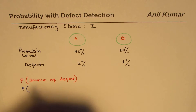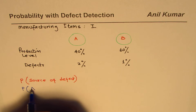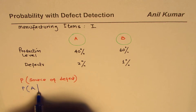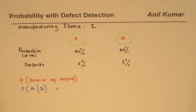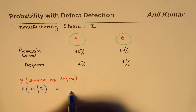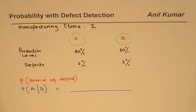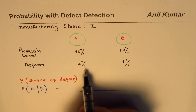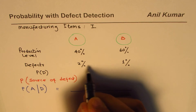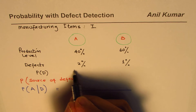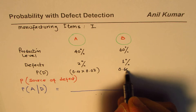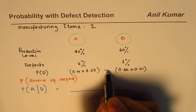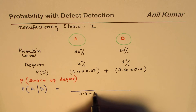We want to find the probability that a defect came from machine A. The defect is D, and we need to find the probability that it came from machine A. We first find the total probability of a defect in the denominator. The probability of defect is the combination from both machines: 0.4 times 0.02 for machine A, plus 0.60 times 0.01 for machine B.